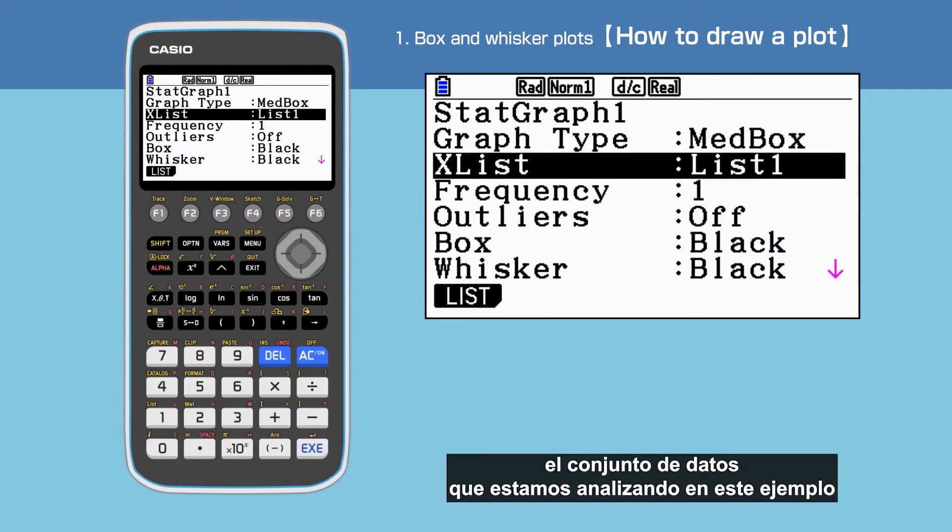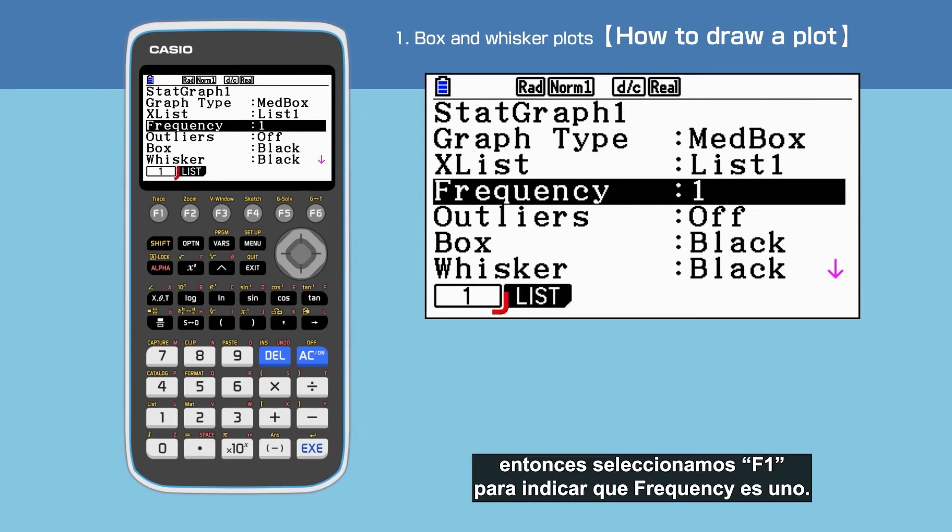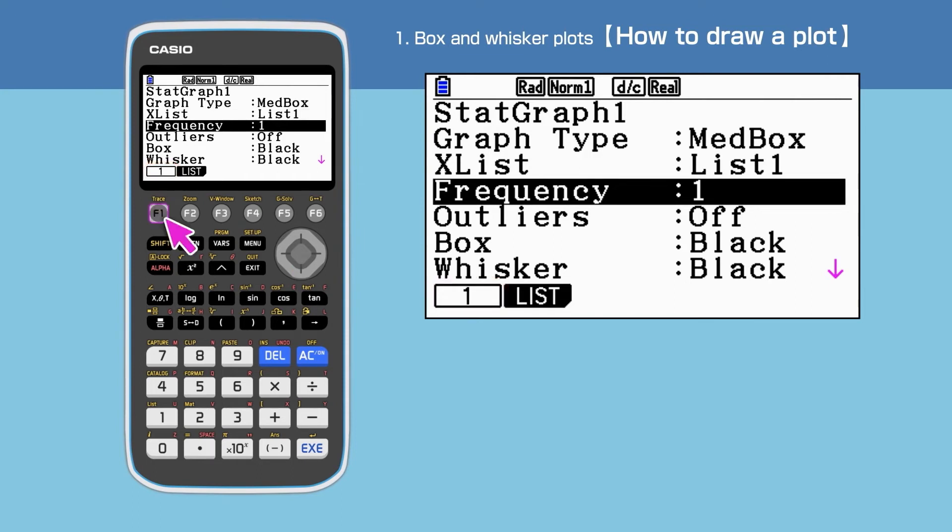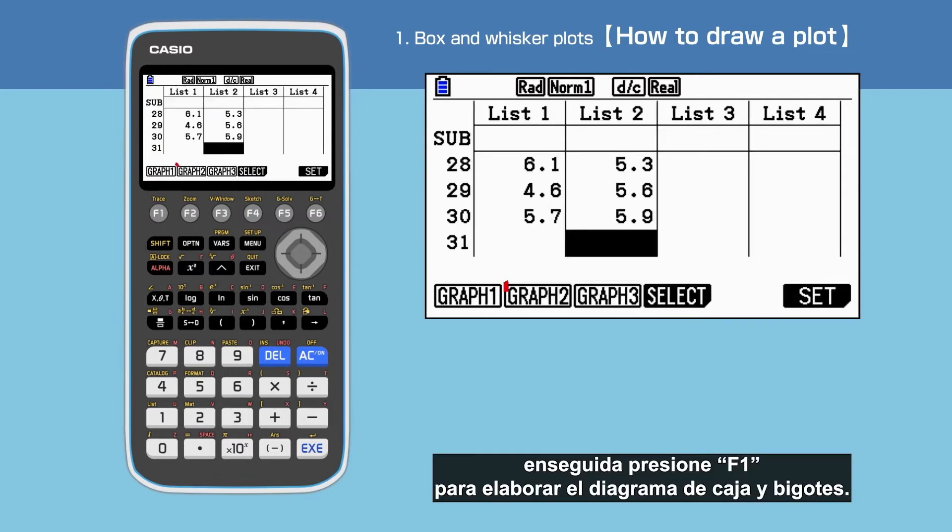The dataset we are looking at in this example is one variable list of data. So we select F1 to choose 1 for frequency. Press Exit to finish the setting and press F1 to draw a box and whisker plot.